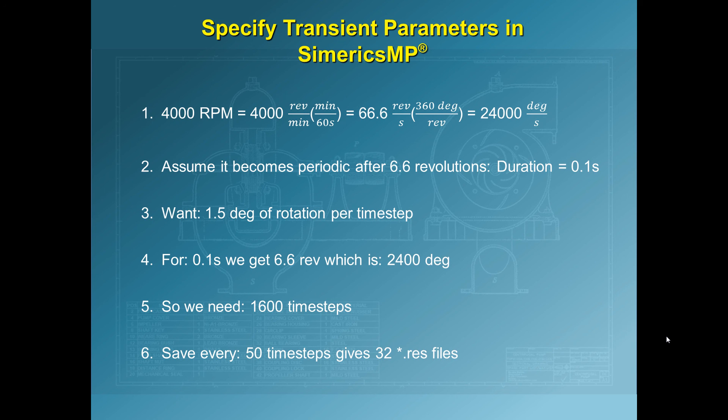To properly resolve the transient behavior, we'll want between 1 and 1.5 degrees of rotation per time step. So for 0.1 seconds, we get 6.6 revolutions, which is 2400 degrees. So this means we'll need 1600 time steps. And the saving frequency, if we save every 50 time steps, that'll give us 32 results files.